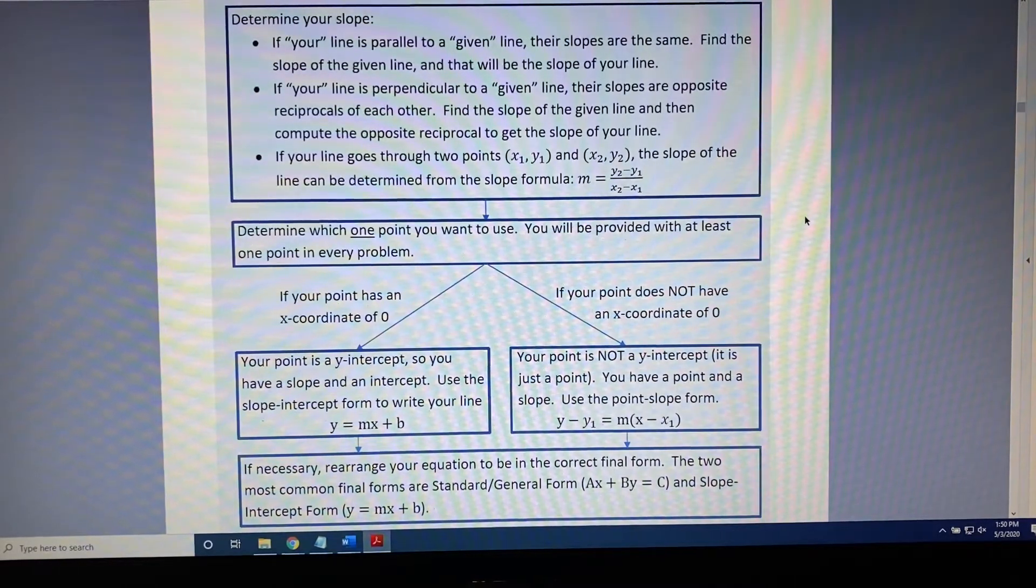If your line needs to go through two points, (x₁, y₁) and (x₂, y₂), the slope of the line can be determined from the slope formula: m equals the difference y₂ minus y₁ over the difference x₂ minus x₁.